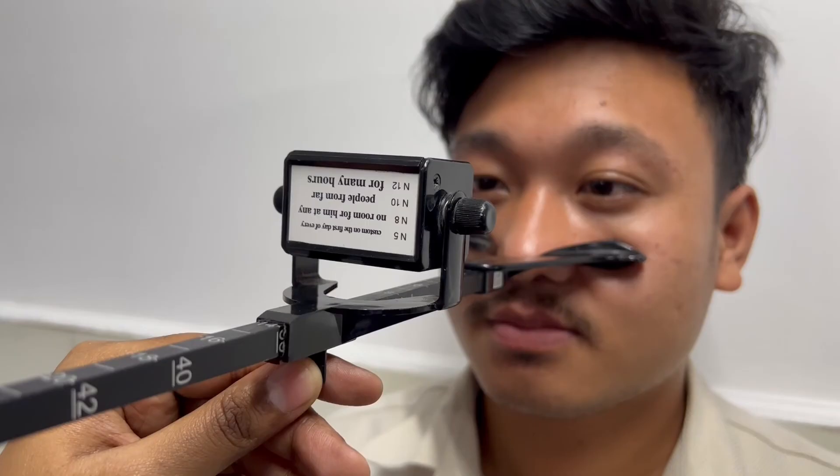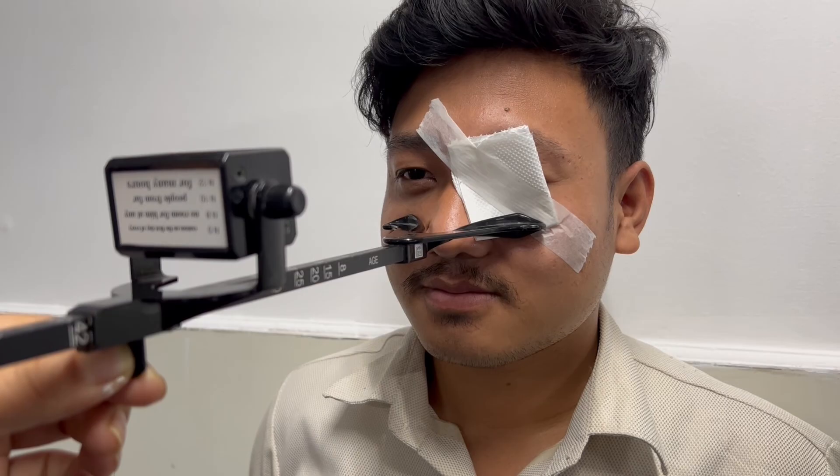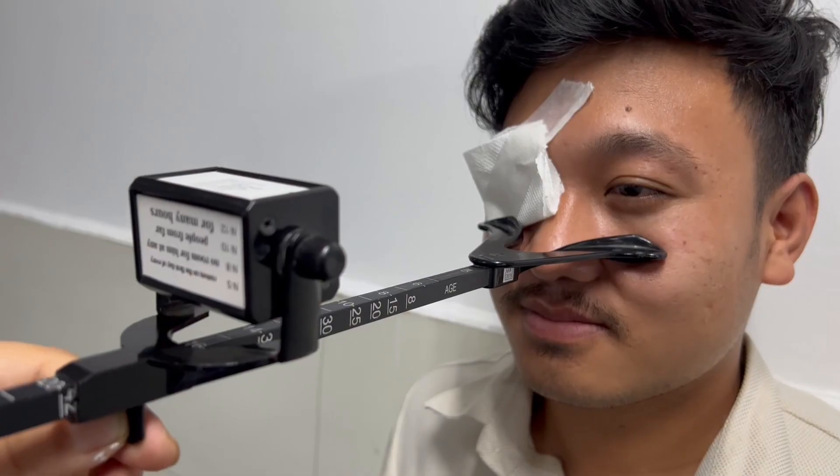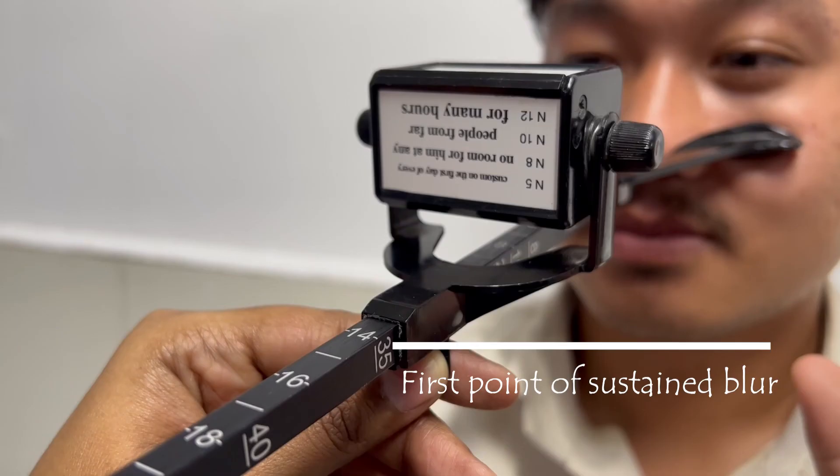The near point of accommodation is measured first binocularly, then monocularly, right eye and left eye separately. The first point of sustained blur is noted in centimeters.